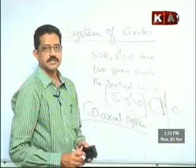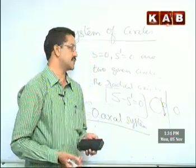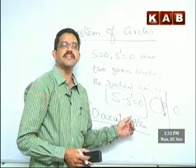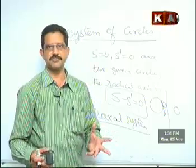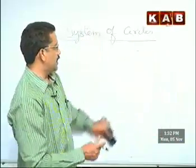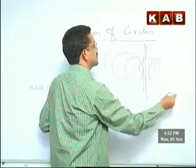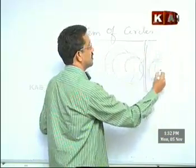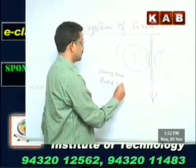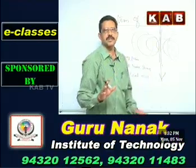A coaxial system of circles is a system of circles for which the radical axis of each pair is the same. When you take two circles, this is the radical axis; for another two circles also, if this is the radical axis, we say this is a system of circles. Every pair should have the same radical axis.